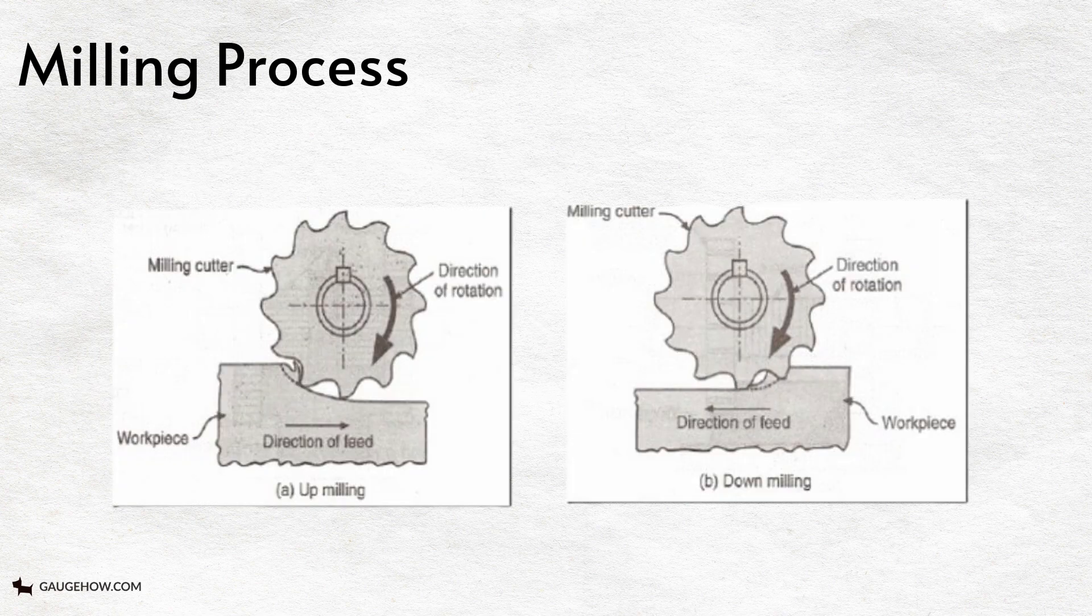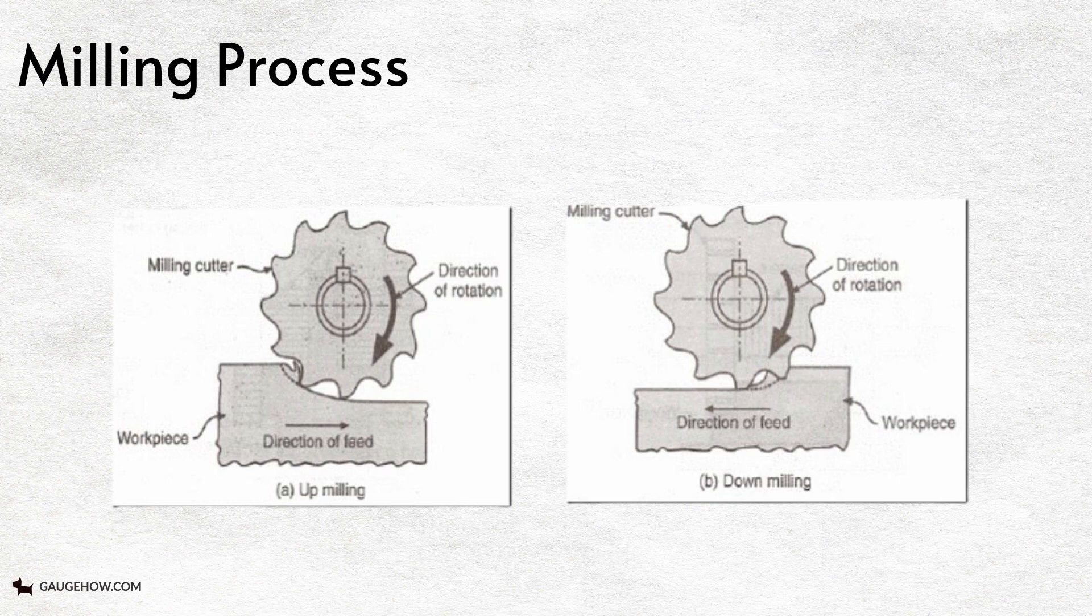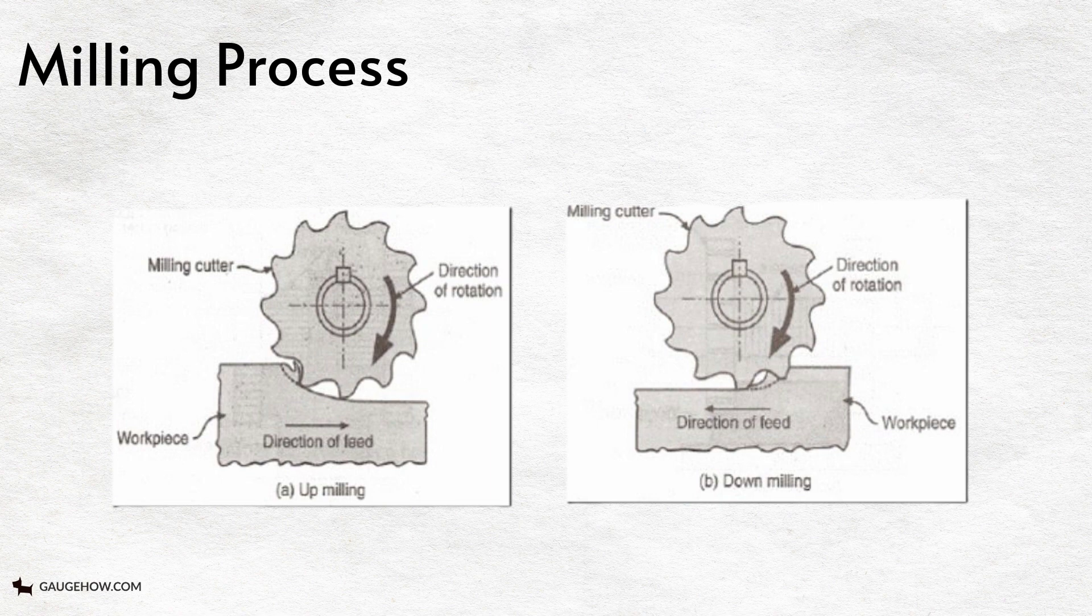In up milling, the direction of rotation of the milling cutter and the direction of the workpiece travel are opposite to each other, whereas in down milling they move in the same direction at the point of contact of the cutter and the workpiece.